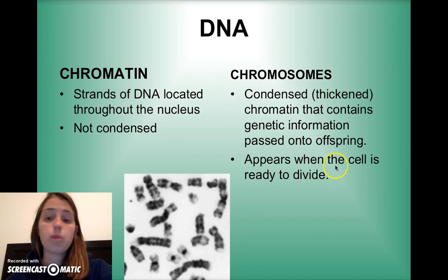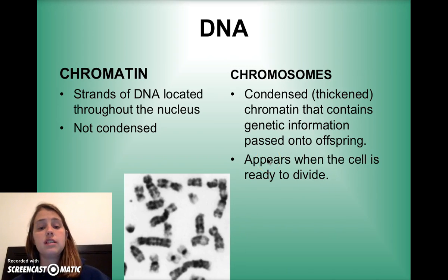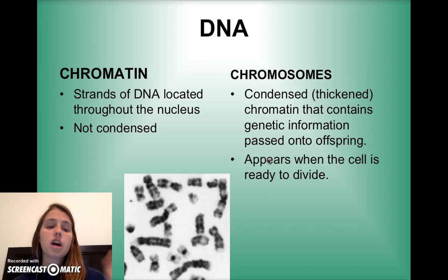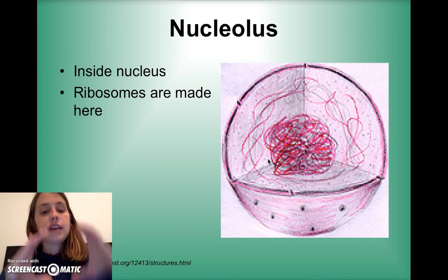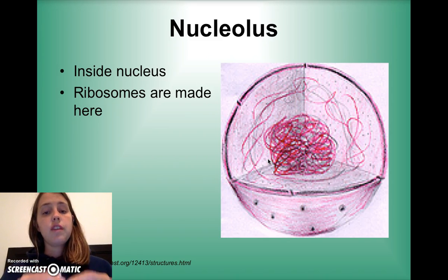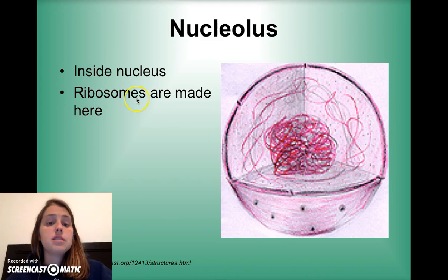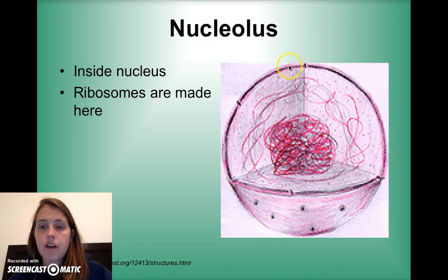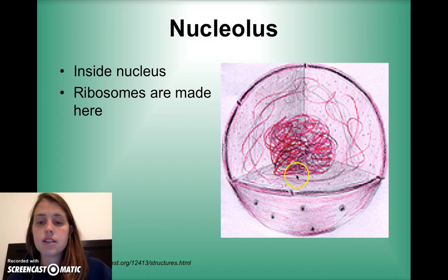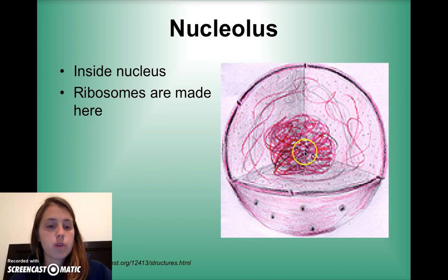Chromosomes only thicken when the cell is ready to divide — going from one cell to two smaller cells; we'll talk more about that later. The nucleolus is essentially the center of the nucleus, where ribosomes are made. So within the nucleus we have the nuclear envelope with nuclear pores, all the chromatin, and in the center the nucleolus where ribosomes are made.